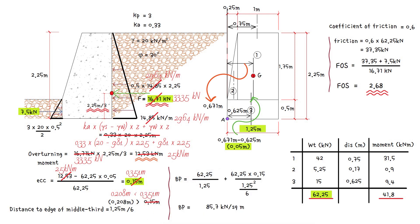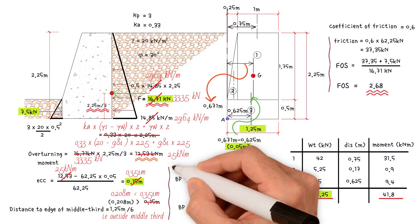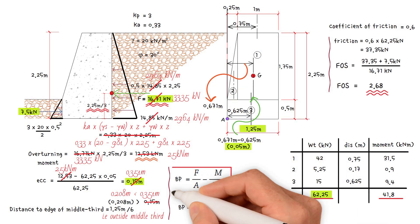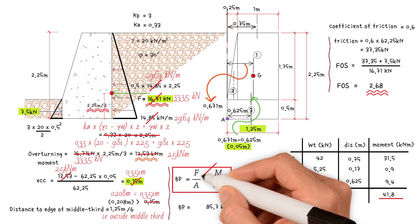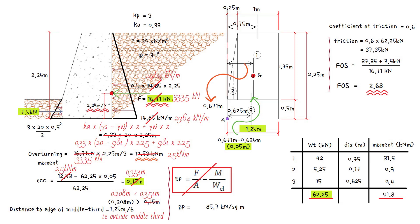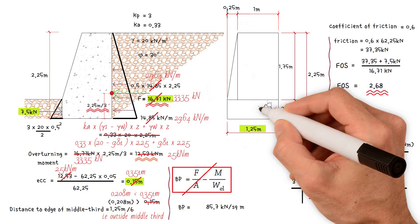In other words, the resultant is outside the middle third. Clearly when this occurs, the tensile stress from bending exceeds the compressive stress from the self-weight. The application of the equation for combined axial force and bending would indicate a region of tension at the base of the wall, which we have already indicated is not appropriate. It is assumed that a tension crack forms over the tensile region.